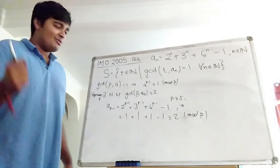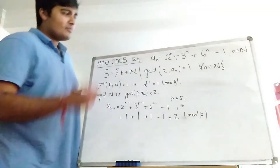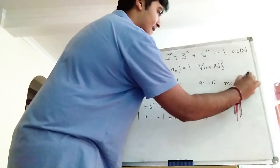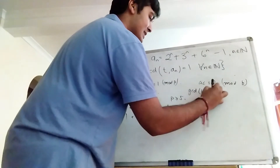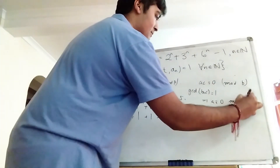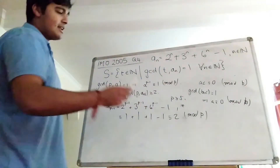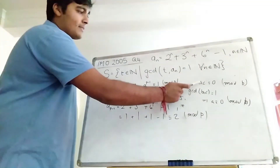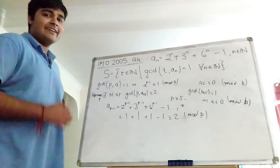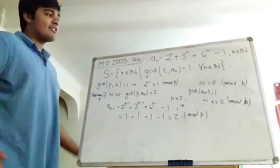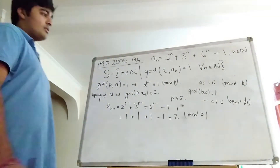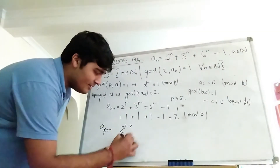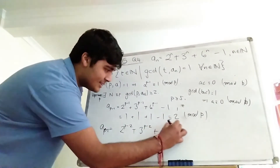We just play around with this a bit further. We record the fact from number theory: if AC is congruent to zero mod B, and the GCD of B and C is one, then that implies A is congruent to zero mod B. In other words, if C and B are co-prime, you can divide both sides by C, and it follows that A is congruent to zero mod B. So the next step may be a leap of faith, but remember you have an hour and a half to play with this problem, so you'd perhaps try another value of n. I'm going to try the value n equals p minus two. So aₚ₋₂ equals 2 to the p minus two, plus 3 to the p minus two, plus 6 to the p minus two, minus one.